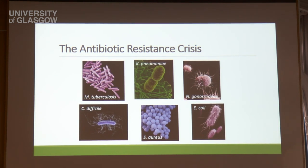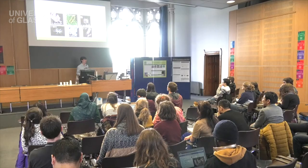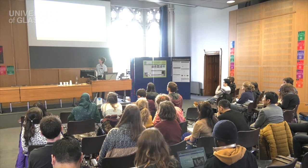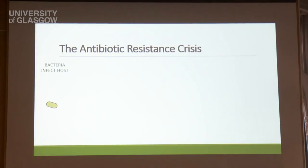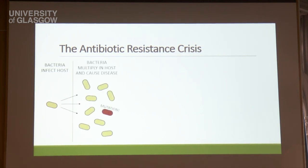So far we've talked about what antibiotic resistance is and what causes it. Let's now look at how it actually arises. At the start of an infection, a small number of bacteria will enter the host and multiply inside the host — which could be a human or an animal — and bacteria multiply so rapidly that they have a very high rate of mutation.